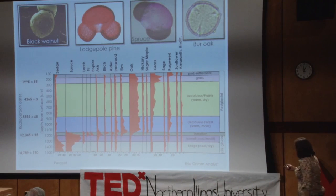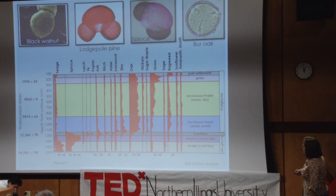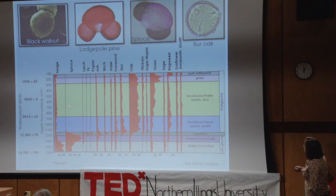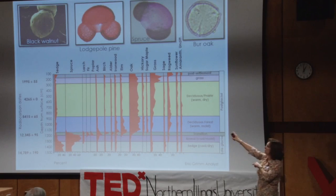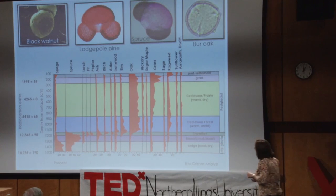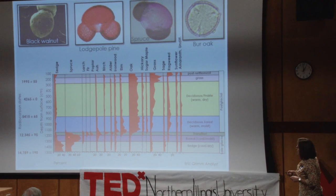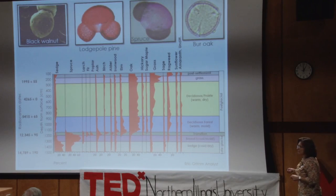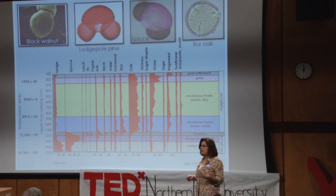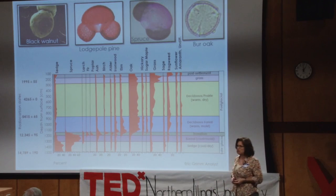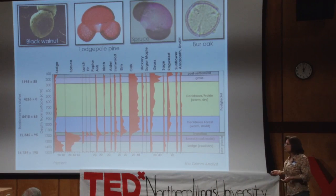This graph takes us back 15,000 years. We look at the pollen and how it shifts through time, moving up toward the present. Here in Illinois — this is Nelson Lake Marsh, just over there — it was a conifer forest 15,000 years ago, then it switches to an oak forest, and then more recently to a grassland. We can document these memories and use them to understand how things change through time and how plants respond to their environment.